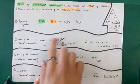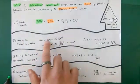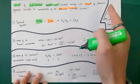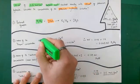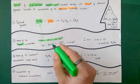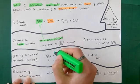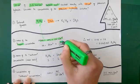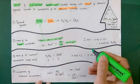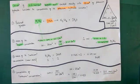Step one is to work out the moles of the substance we know the concentration of — the sulfuric acid. Moles equals concentration times volume. My volume is in cm³, so I divide 30 by 1,000 to convert it to dm³. Then: moles equals concentration times volume, giving 0.045 moles of sulfuric acid.